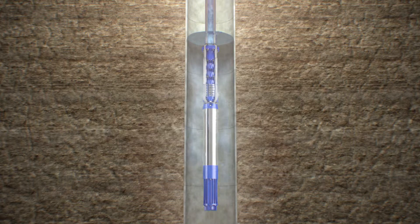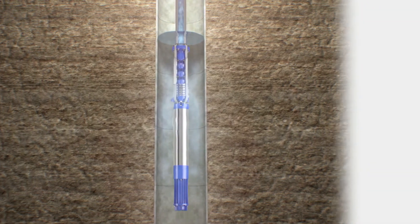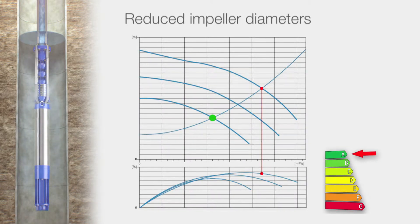There are three options for adjusting pump performance to meet the requirements of the user. Number 1 – By reduced impeller diameters. The pump performance is indeed reduced, but the hydraulics also deteriorates, thereby reducing the pump efficiency and increasing energy requirements.